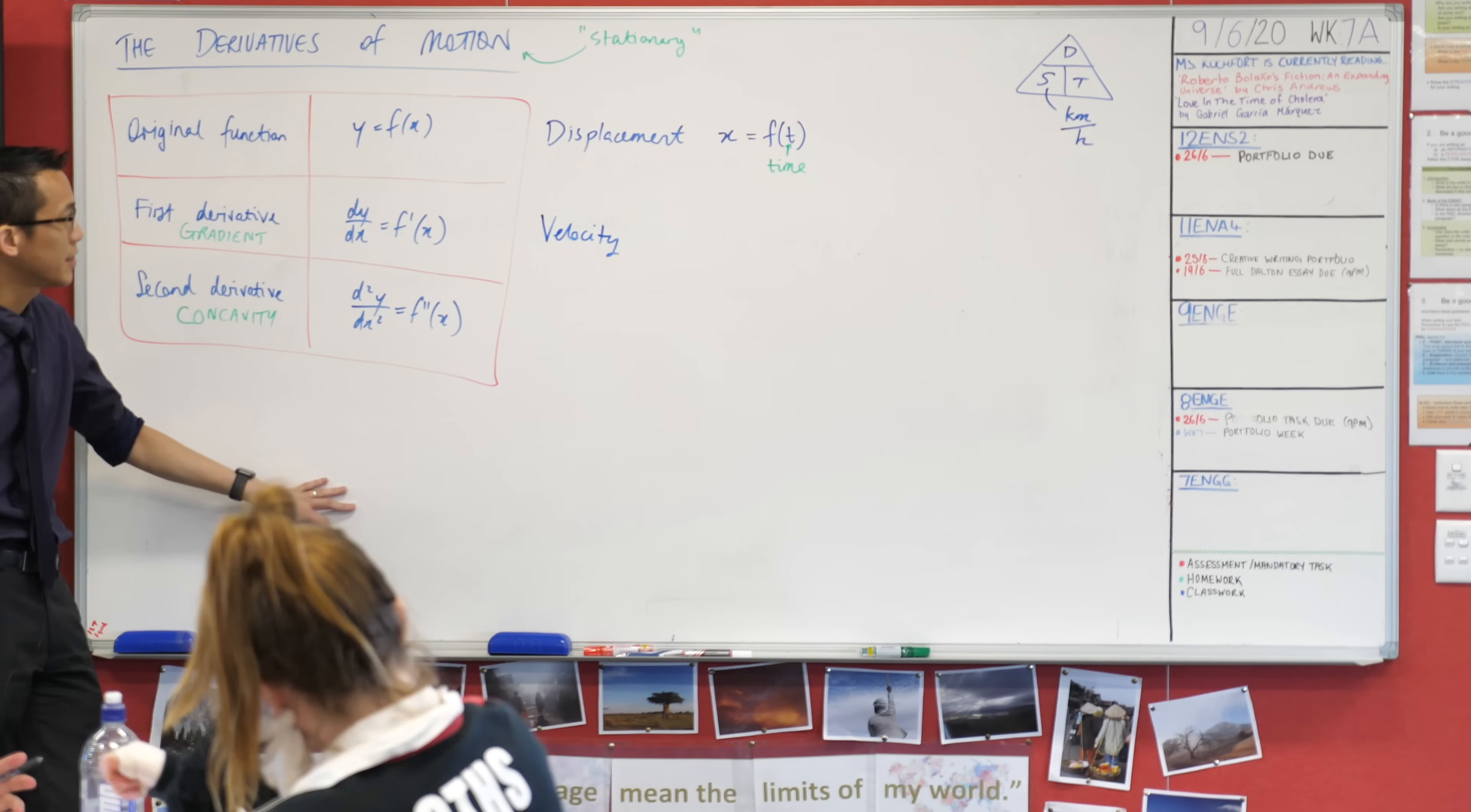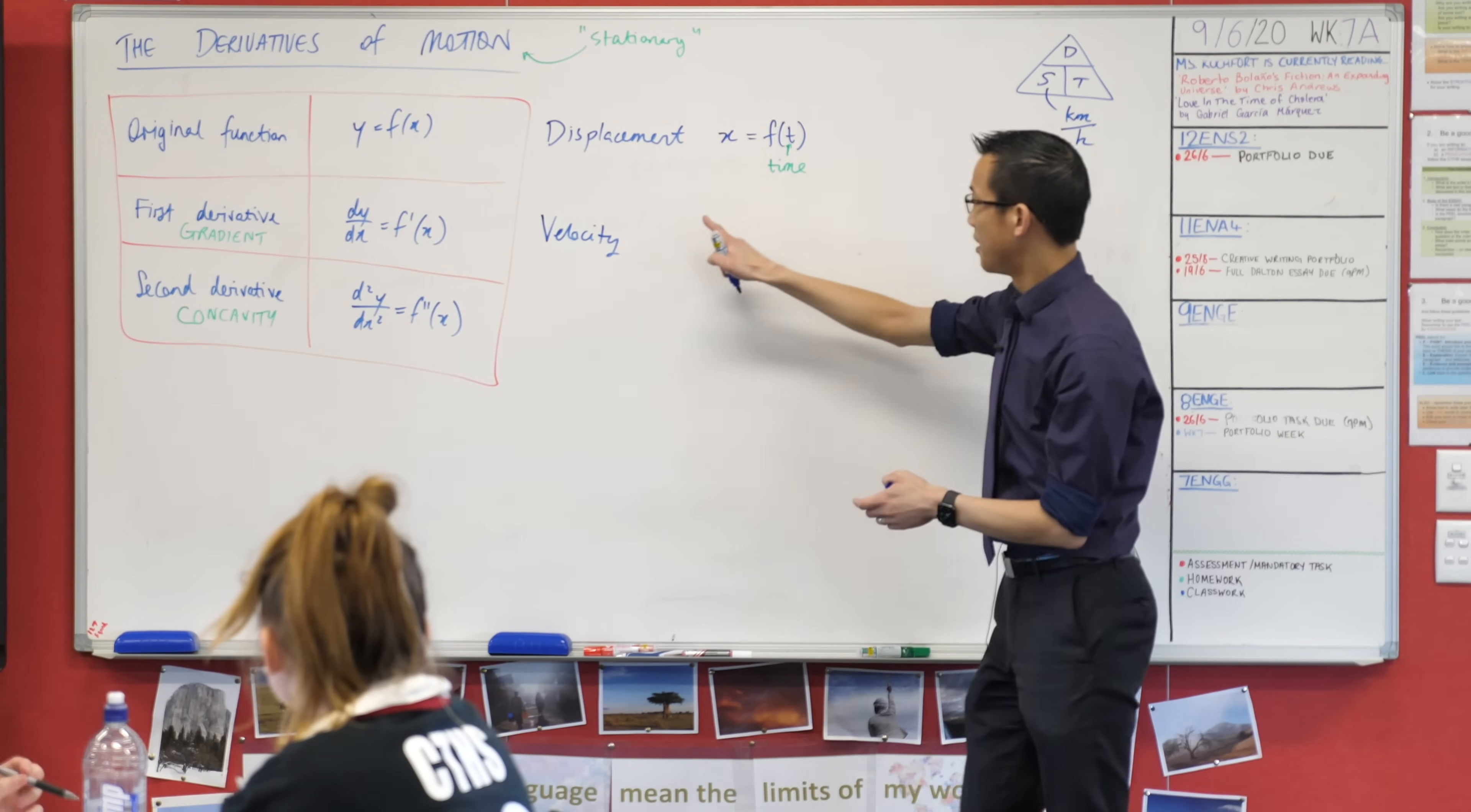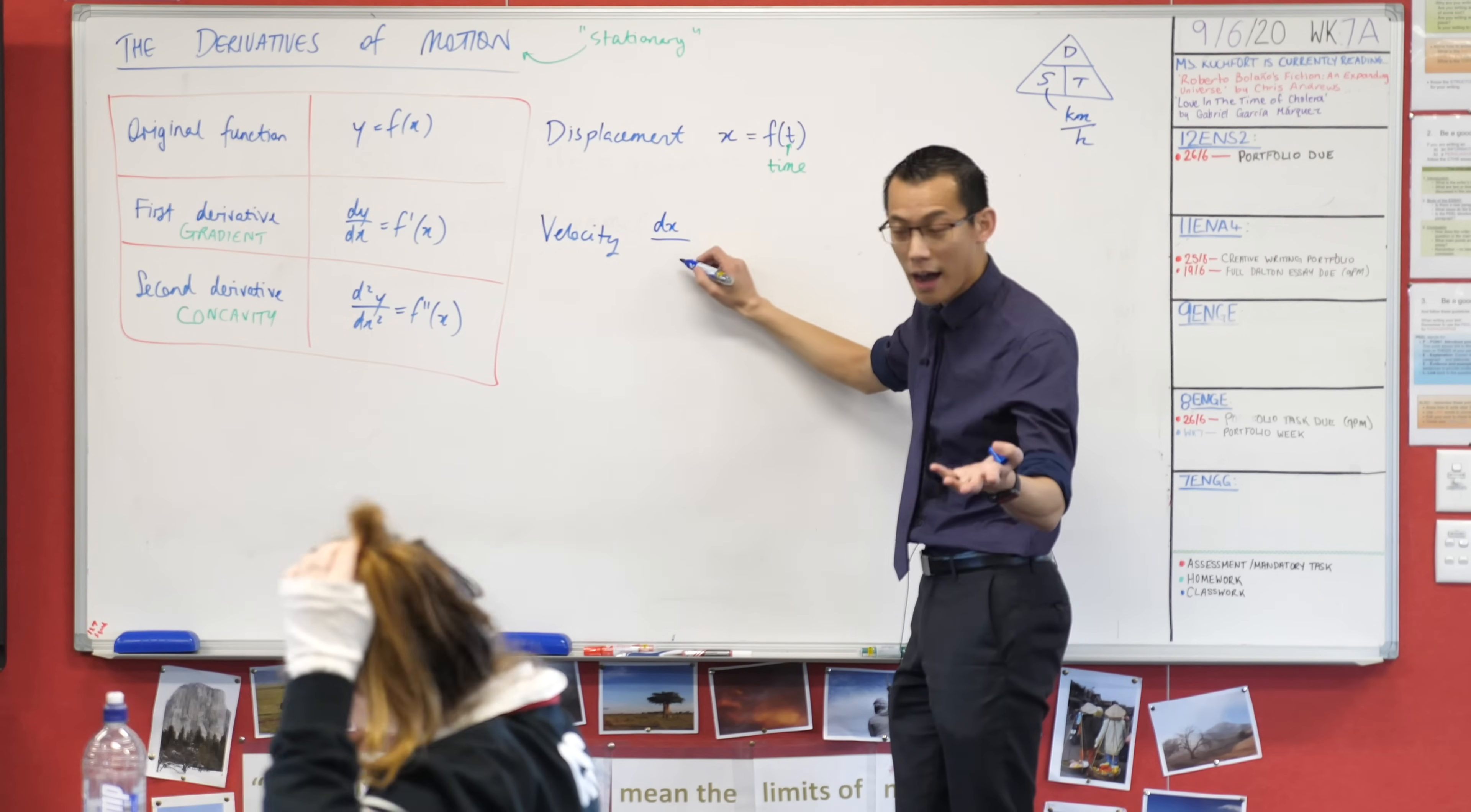We'll distinguish between these in more detail in a second, but if you're thinking about the gradient, you're going up or down, you're really thinking about the velocity of this object that's moving. What I'm differentiating is x with respect to time, so this is dx on dt.